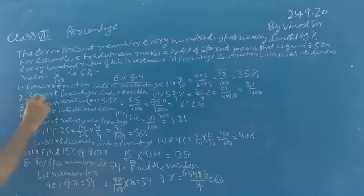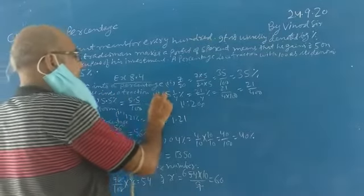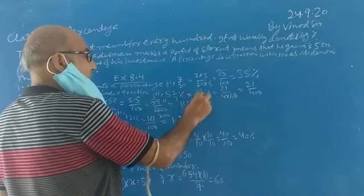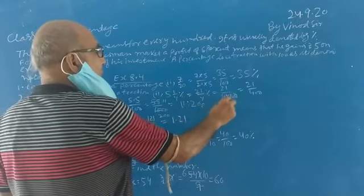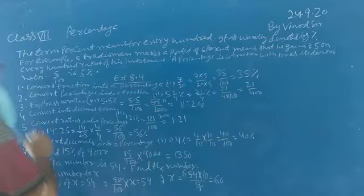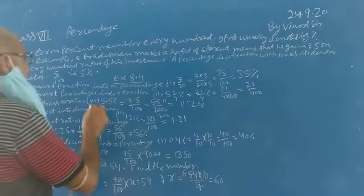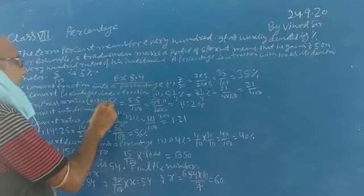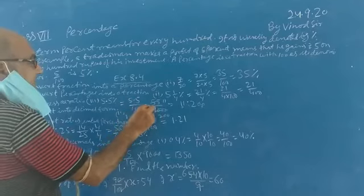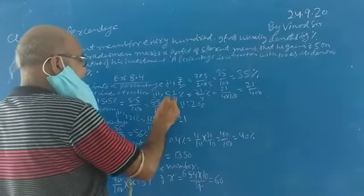Second question. Convert 5 and 1 by 4 percent into a fraction. 5 and 1/4 percent equals 21 by 4 percent, equals 21 by 400, which simplifies to 11 by 200.